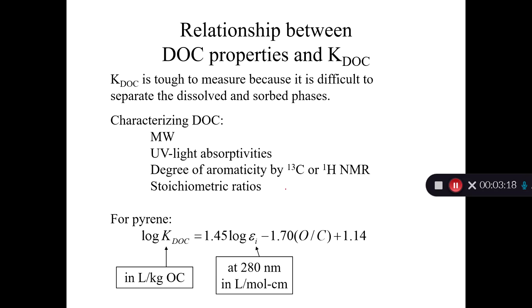So the value of the equilibrium constant for sorption of our chemical to the dissolved organic carbon, which is KDOC, is going to depend on the properties of the DOC. In the sorption lecture, we talked about the fact that organic carbon is different depending on where you get it from. There's all different types of organic carbon in the world. Well, it's also true that there's all different types of dissolved organic carbon in the world.